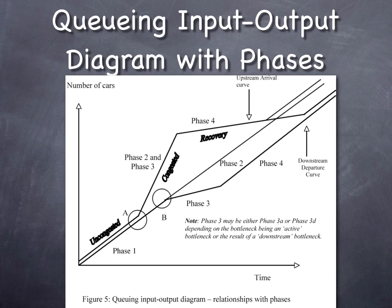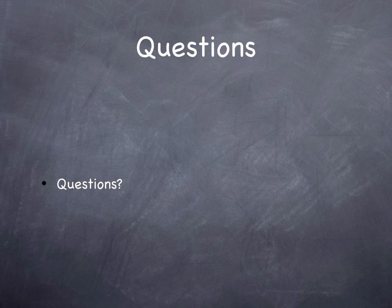If you had race car drivers, you'd get a higher throughput until they crashed, and race car drivers tend to crash a lot.